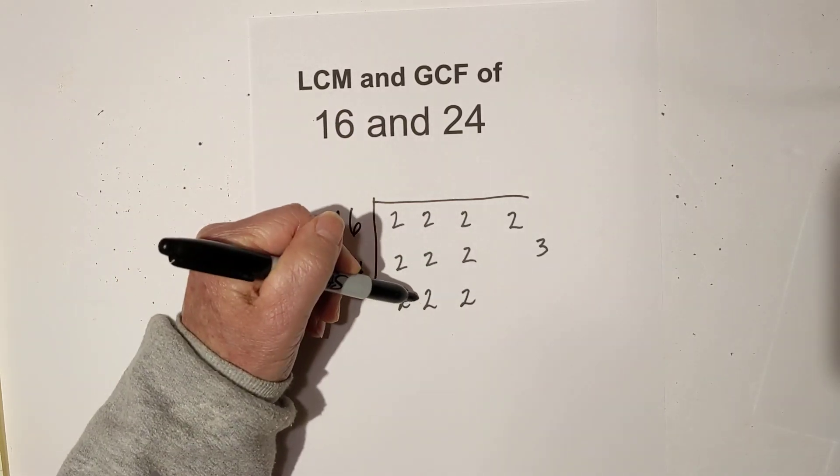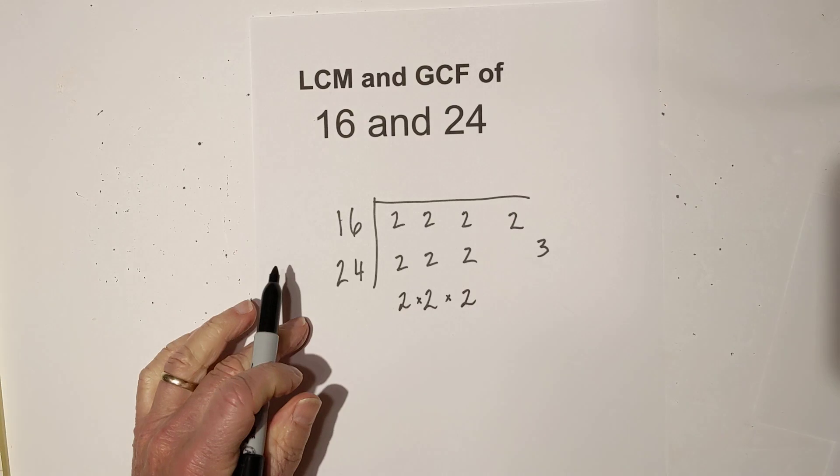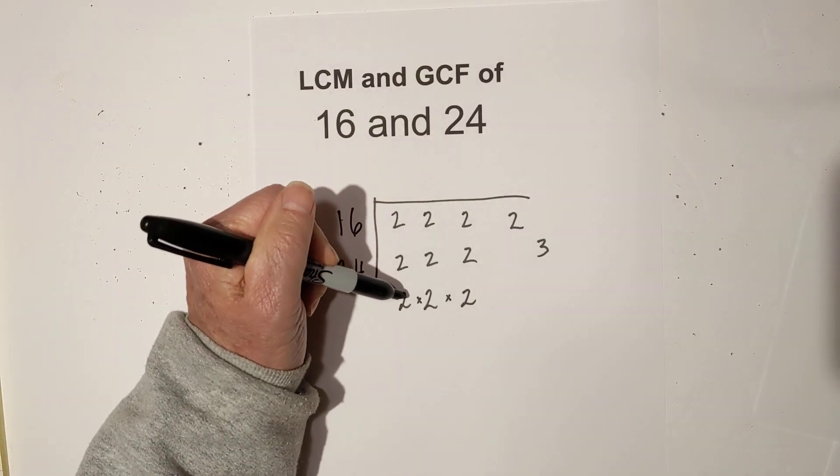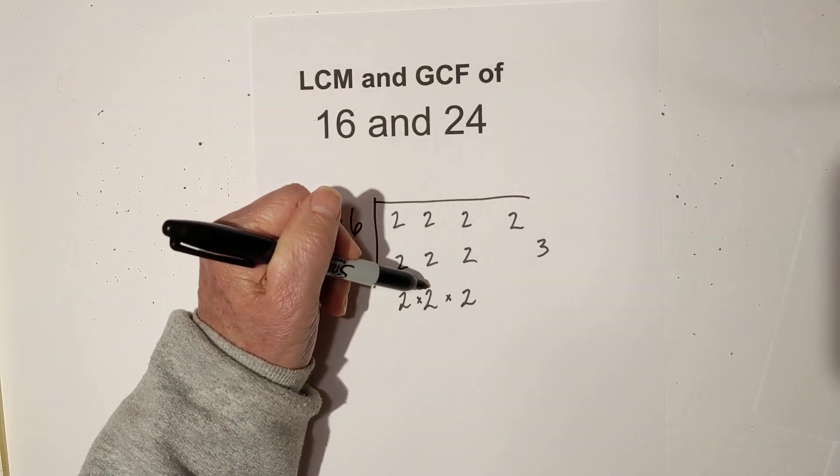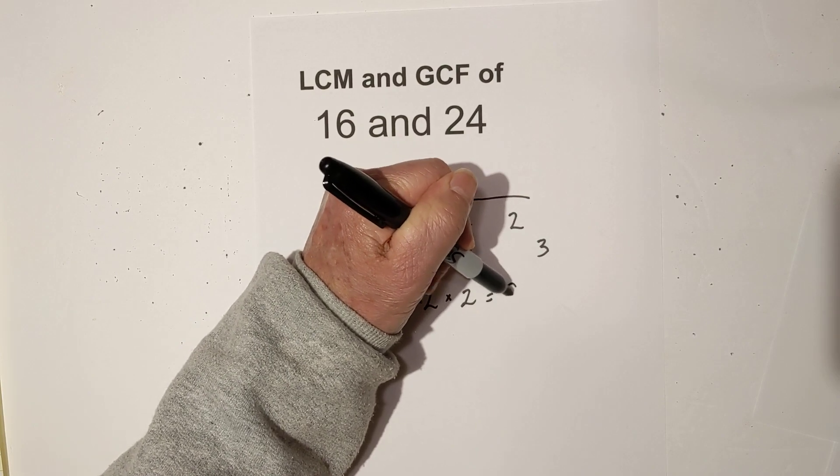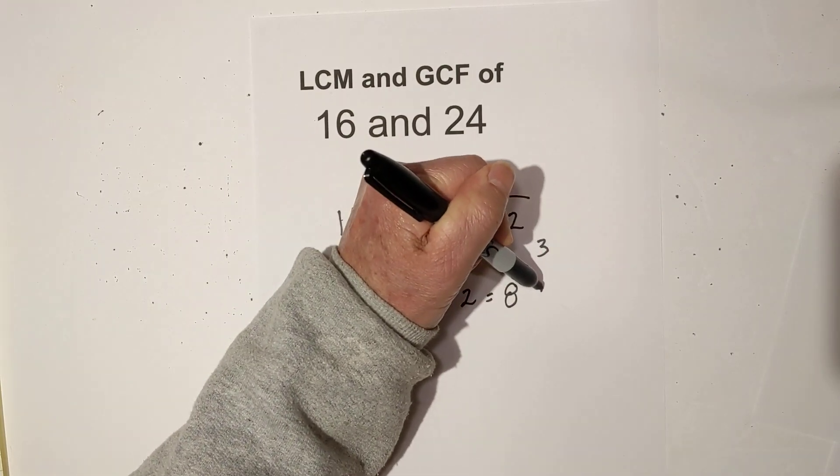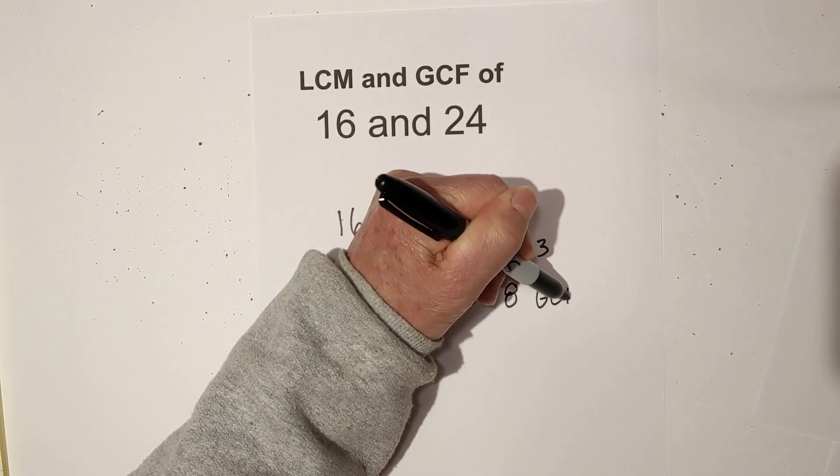And then I just multiply these together, and that gives me the greatest common factor, which is 2 times 2 is 4, 4 times 2 is 8. So that is the GCF.